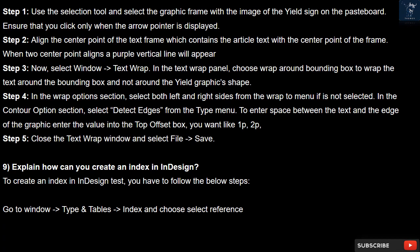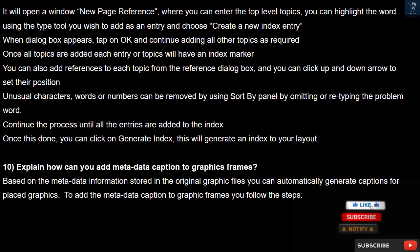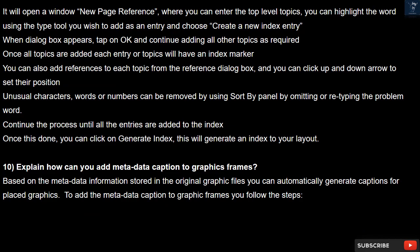Question 9. Explain how can you create an index in InDesign? To create an index in InDesign, follow these steps: Go to Window > Type and Tables > Index and choose Select Reference. A New Page Reference window will open where you can enter top-level topics. Highlight the word using the Type tool that you wish to add as an entry and choose Create a New Index Entry. When the dialog box appears, tap OK and continue adding all other topics. Once all topics are added, each entry will have an index marker. You can add references to each topic from the reference dialog box and use the up and down arrows to set their position. Unusual characters, words, or numbers can be removed using the Sort By panel. Continue until all entries are added, then click Generate Index to generate the index in your layout.